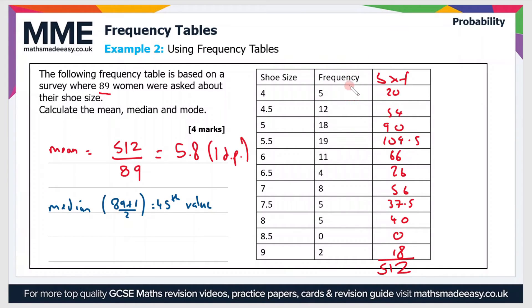If we total up the frequency column going one row at a time, the first row takes us up to the 5th value. The second row takes us up to the 17th value. All I've done there is added the 5 and the 12. If we do the same for the next row, that takes us up to the 35th value because we've added 18 there. Then if we add 19 on the next row, that takes us up to the 54th value. As you can see, we've gone past the 45th value, so the median is in this shoe size. Therefore, the median is 5.5.